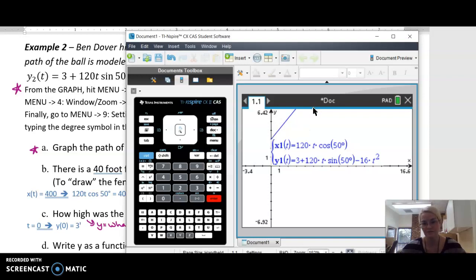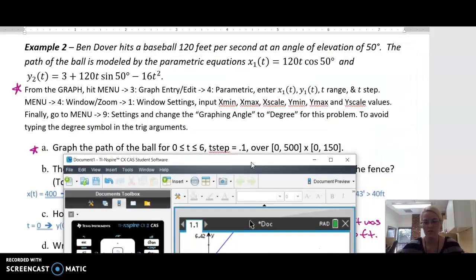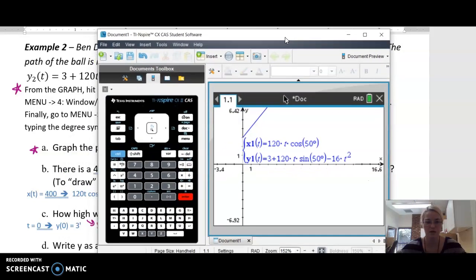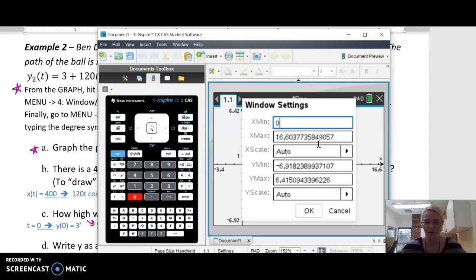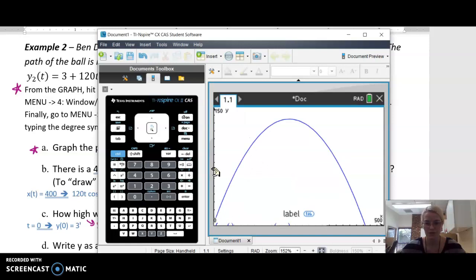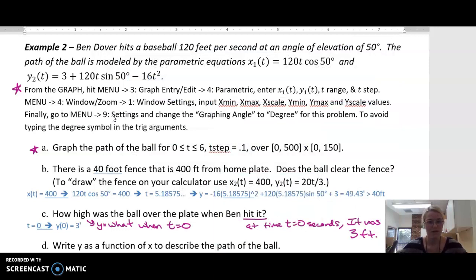Let's try graphing this again. And now suddenly, look, it looks like the ball's going up. What did the directions say? It said over a window 0 to 500, 0 to 150. So to do that, we're going to go to menu, window, zoom, window settings. I want my X-min to be 0, my X-max to be 500. I want my Y-min to be 0, my Y-max to be 150. That sure looks like the nice path of a ball being hit, a baseball being hit.